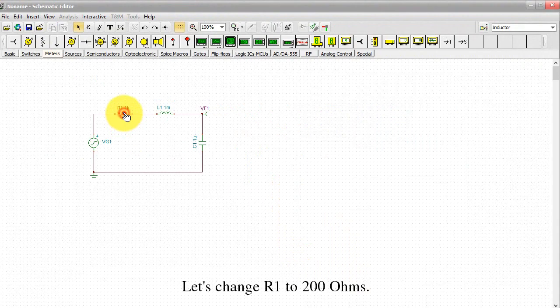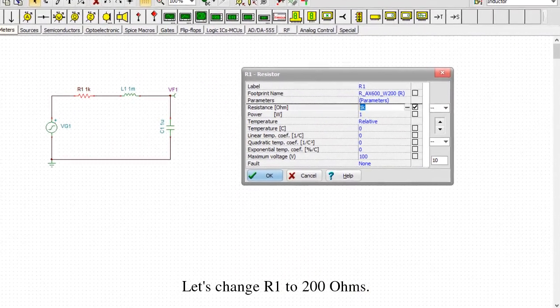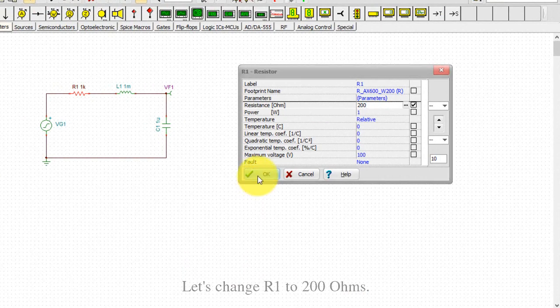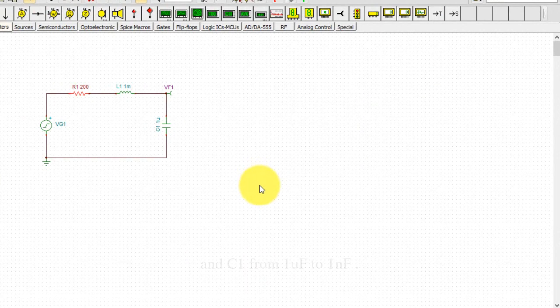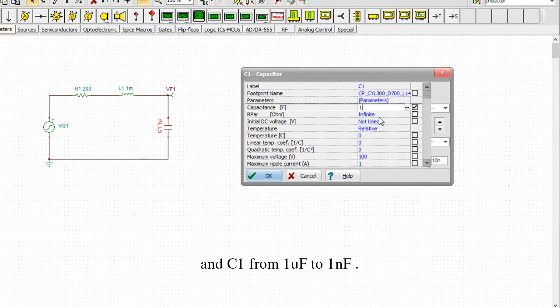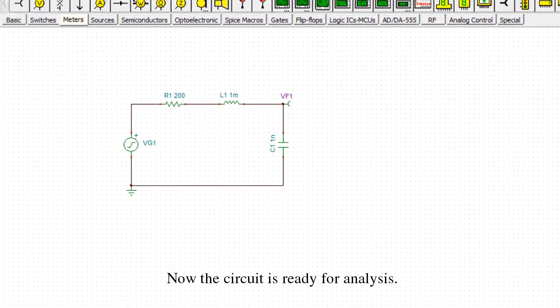Let's change R1 to 200 ohms and C1 from 1 microfarad to 1 nanofarad. Note that you should just enter 1N for 1 nanofarad. Now the circuit is ready for analysis.